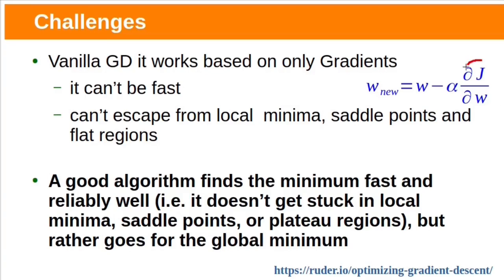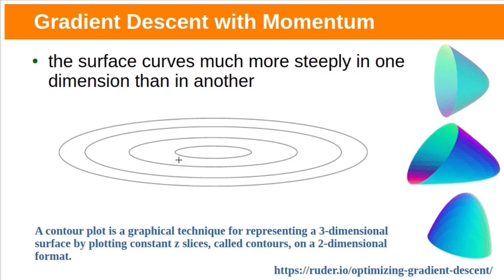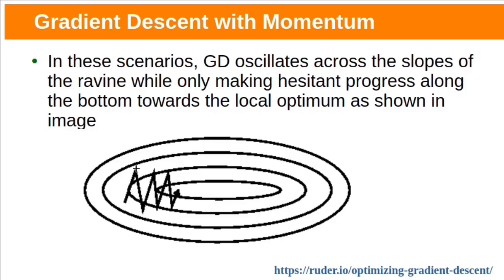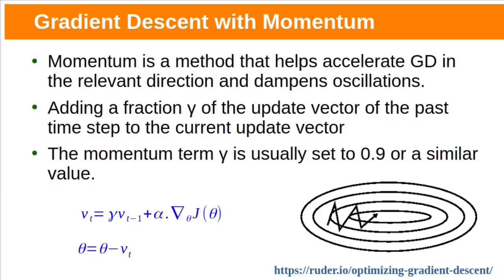A good optimization algorithm finds the minimum fast and reliably — it doesn't get stuck at local minima, saddle points, or flat regions, but rather goes for the global minimum. If you have a cost function which has contours like this, where the surface goes more steeply in one dimension than the other, vanilla gradient descent will oscillate across the slopes as shown in this image. Momentum is a method that helps accelerate the gradient descent in the relevant direction and reduce this oscillation.